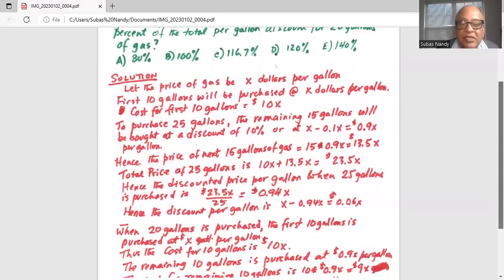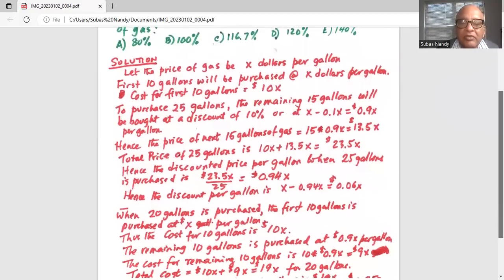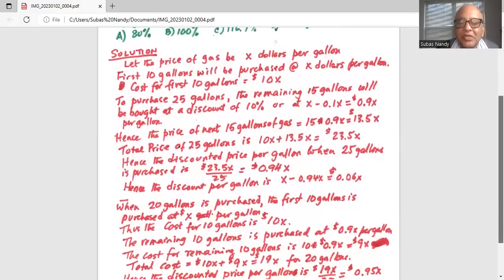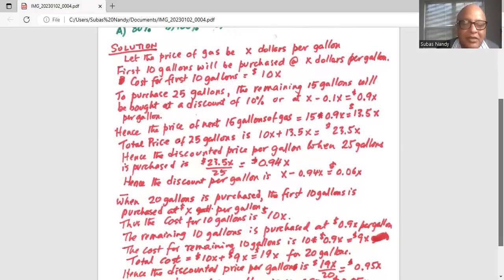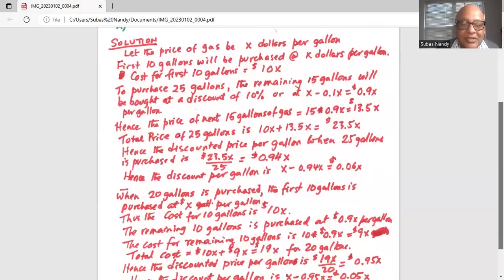When 20 gallons is purchased, the first 10 gallons is purchased at X per gallon and the cost for first 10 gallons is 10X. The remaining 10 gallons is purchased at 0.9X per gallon.